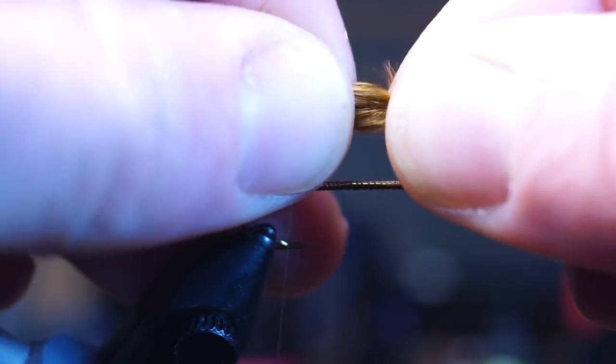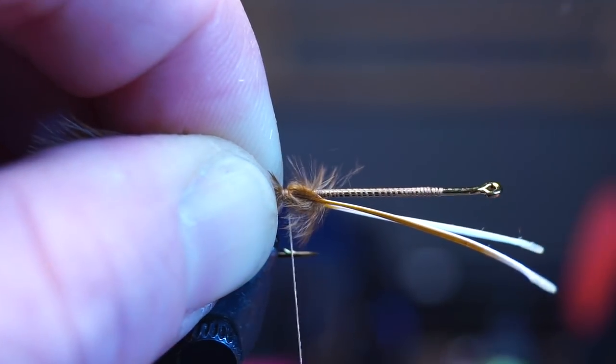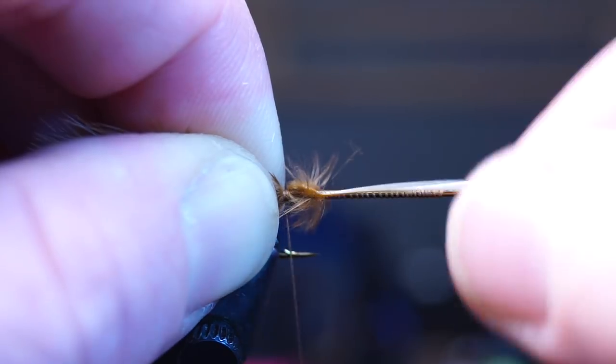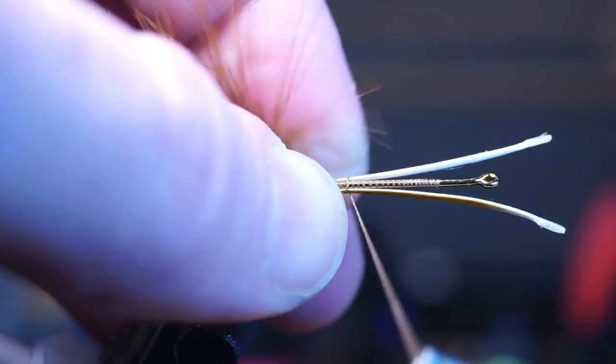Measure out about a hook shank length, then tie them in so they split the shank on either side. You might need to adjust the stem so they lay on the side of the fly and won't spin. This will ensure a smooth base for our next few steps.